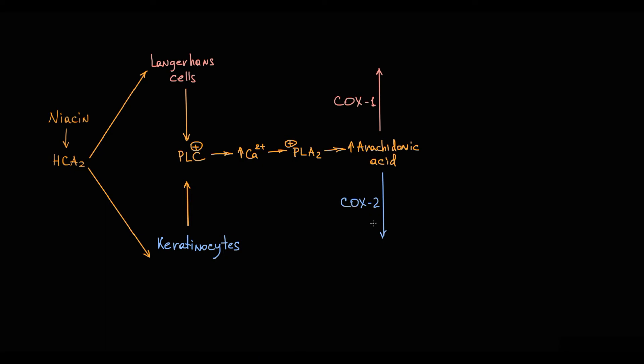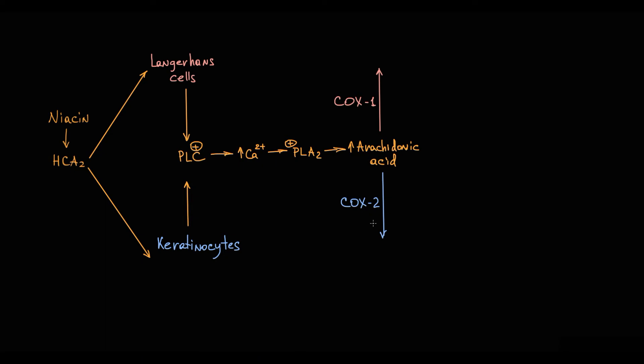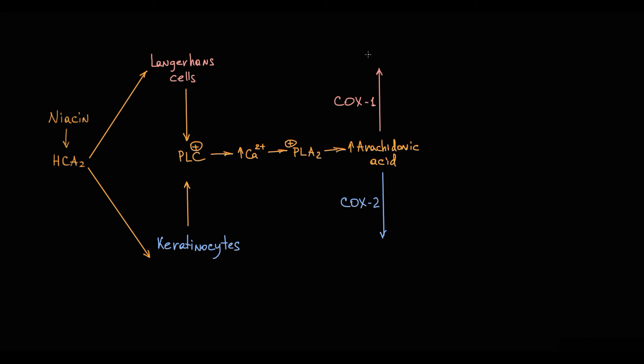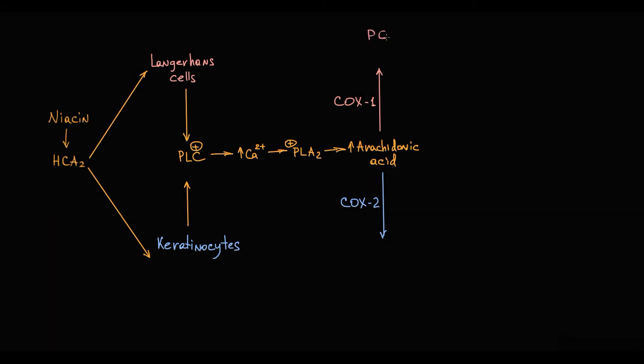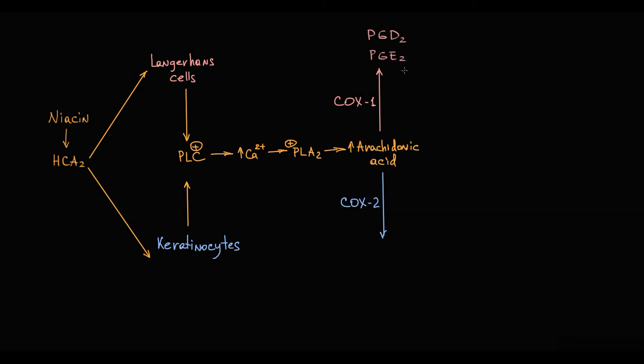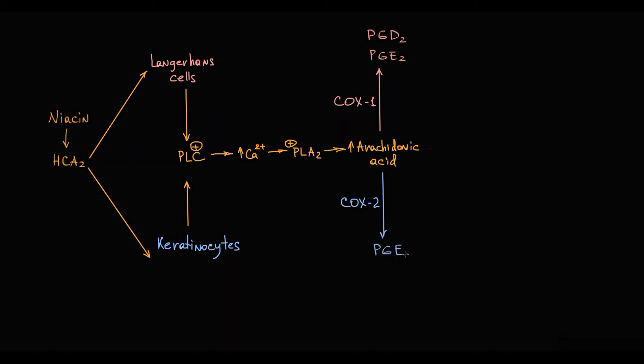COX enzyme from arachidonic acid is capable of forming various types of prostaglandins. COX-1 enzyme in Langerhans cells forms prostaglandin D2 and prostaglandin E2. COX-2 enzyme in keratinocytes forms prostaglandin E2.